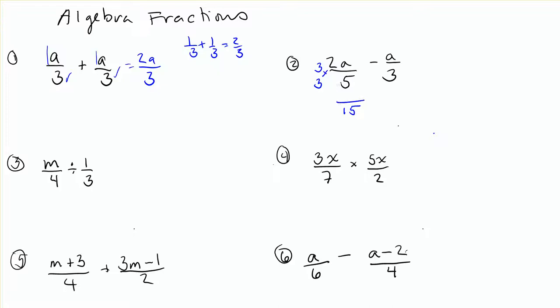And that gets me 3 times 2 on top is 6a, minus timesing this side by 5 to get to 15. 3 times 5 on the bottom is 15. 5 times a on top is 5a. So I get 1a over 15, which you can also just write as a over 15, because the 1 can always be invisible.